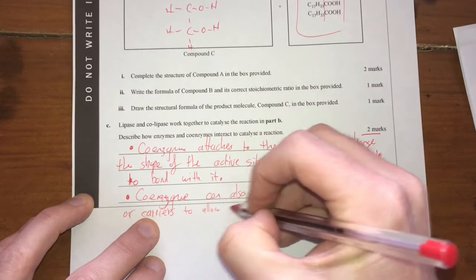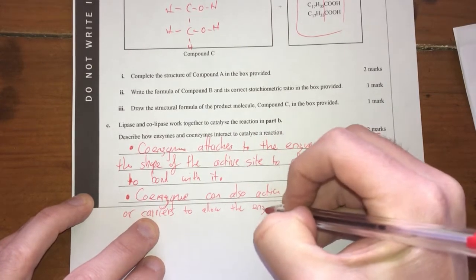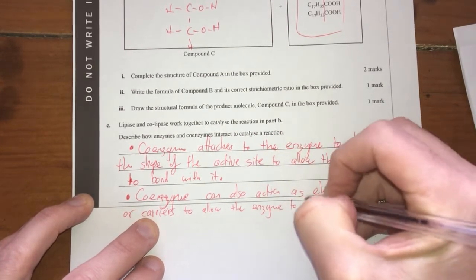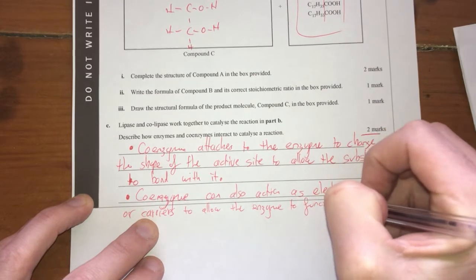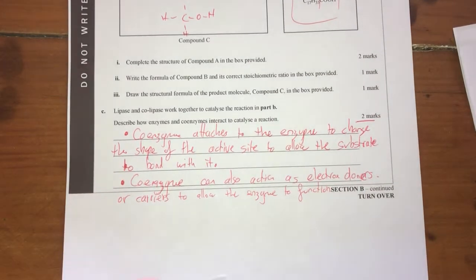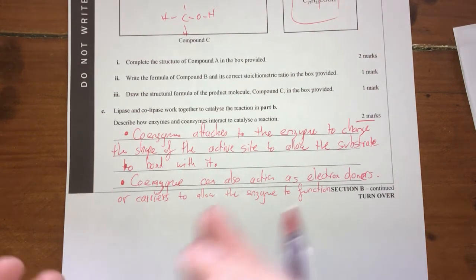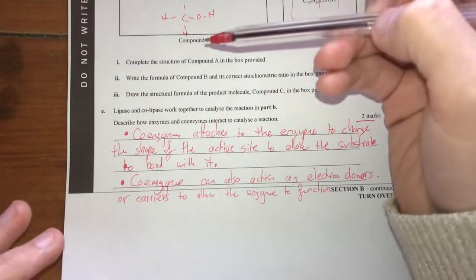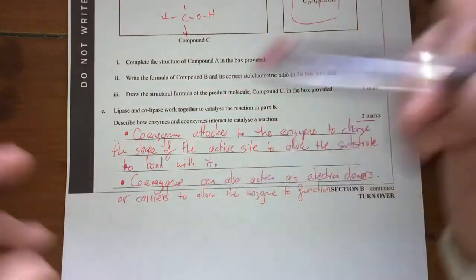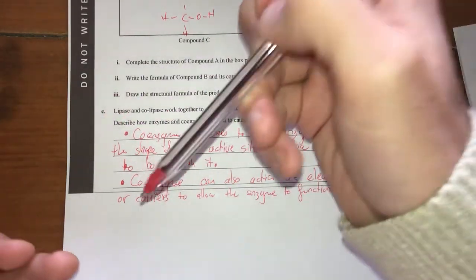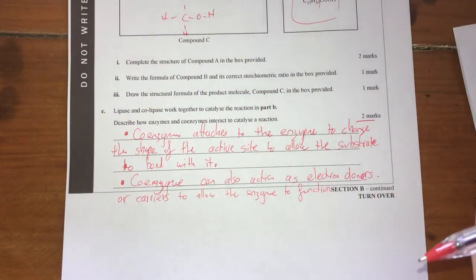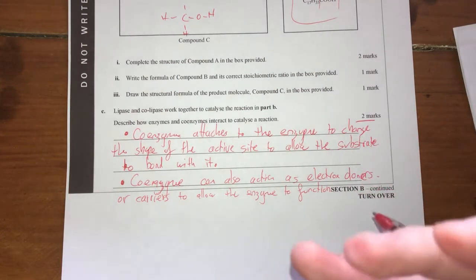The other way that a coenzyme can work is coenzymes can also act as electron donors or carriers. To allow the enzyme to function. So that's basically what they do. They participate in an enzyme kind of function. They give an electron to the substrate to do its business and then at the end of it they give the electron back. So therefore, they're unchanged which makes them a coenzyme.